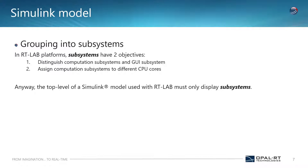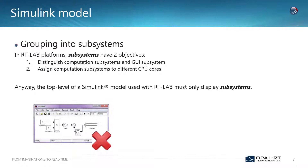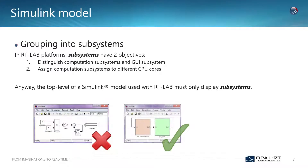One subsystem of the computational part will use one CPU core of your simulator. You need to know how many cores your simulator has that you are going to use for real-time simulation. Here you can see two subsystems are created: one is the computational block and another is the graphical block. The graphical block on the right side (the green one) contains only input and output ports.